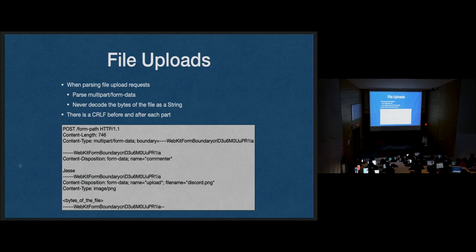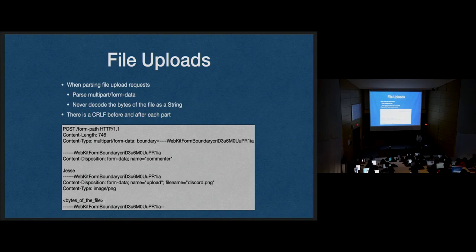With this format, we do have a new line after each part, so keep that in mind. There is a newline character here, here, and here. So keep that in mind when you're parsing. If you have the extra newline character that you're interpreting as part of your file, it's going to corrupt the file just a little bit. It might still render — you might get away with it — but also it might not. At the end of the bytes of the file is a newline character.